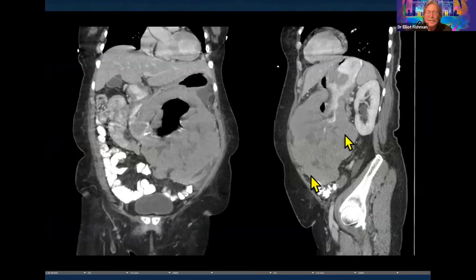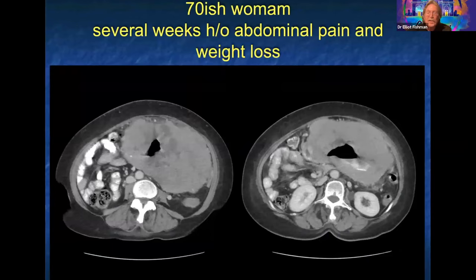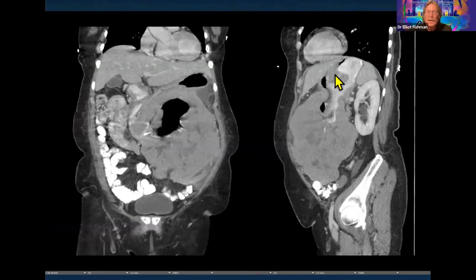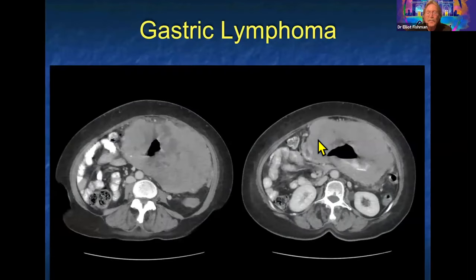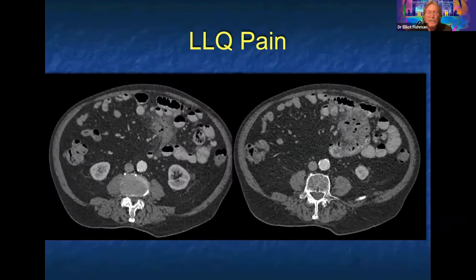Getting away from the cecum — patient with abdominal pain and weight loss. Looks similar but it's more the stomach. Answers mainly GIST and lymphoma. GIST is a good thought — it's a big ulceration in the stomach, and GISTs commonly ulcerate and can be very large. But this was gastric lymphoma. Gastric lymphoma can be very bulky, and this was a really nice example.